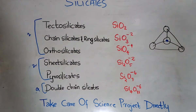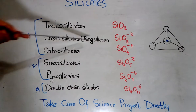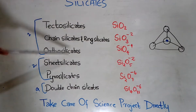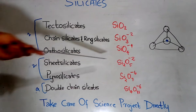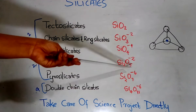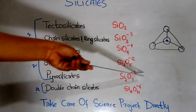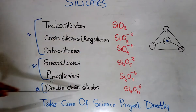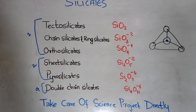Now let us go through each of the general formulas. Tectosilicates is SiO2. Chain silicates and ring silicates both have the same general formula, which is SiO3²⁻. Orthosilicates is SiO4⁴⁻. Sheet silicates is Si2O5²⁻. Pyrosilicates is Si2O7⁶⁻. Double chain silicates is Si4O11⁶⁻.